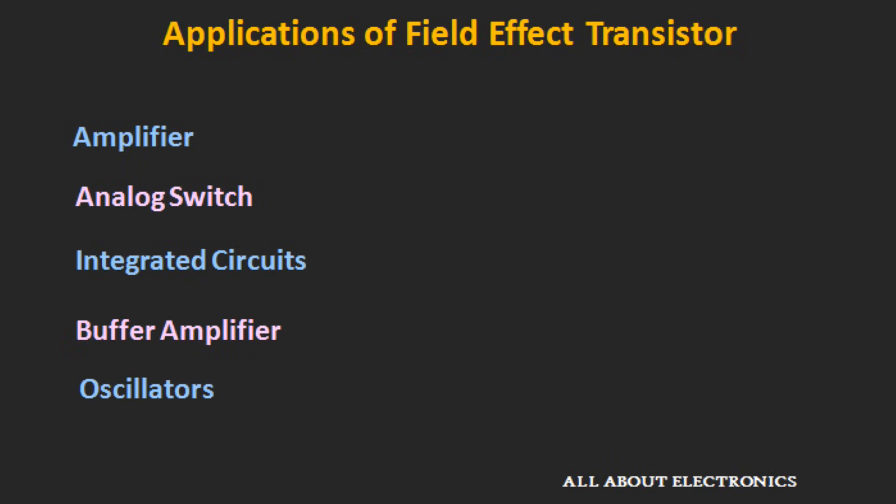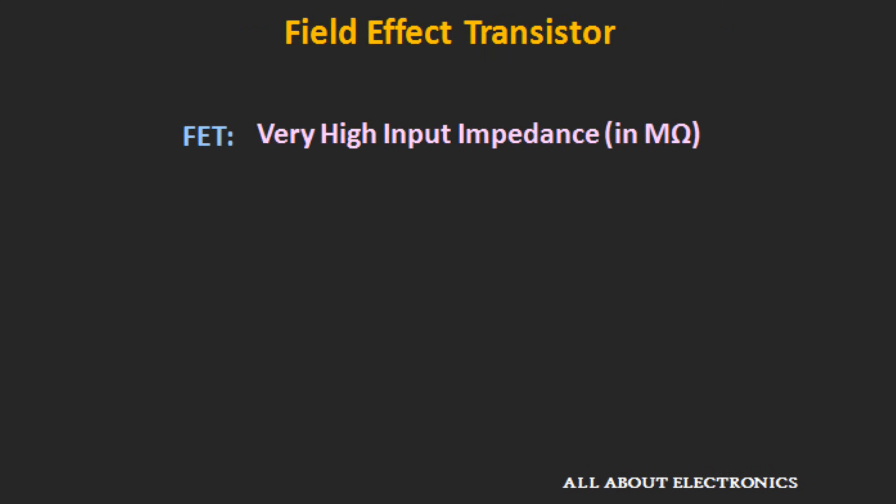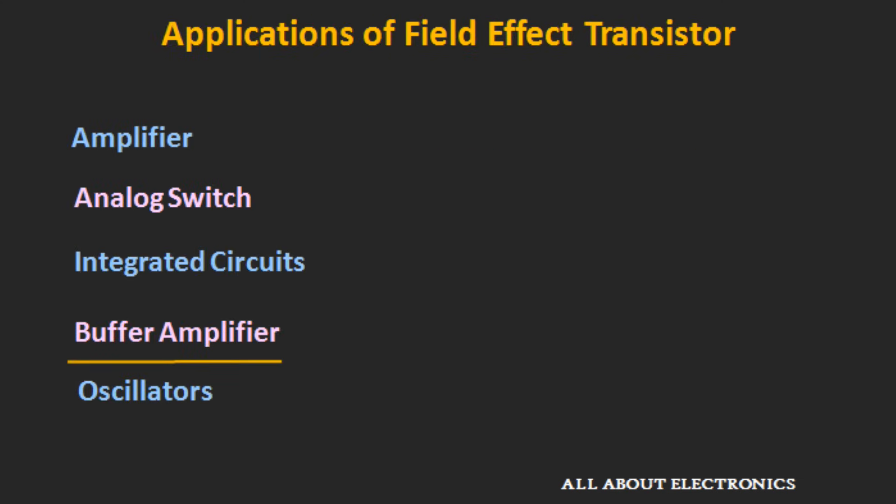In terms of application, FETs are used in almost all the applications where BJTs are used. For example, they are used as an amplifier or oscillator in many applications. Apart from that, they are also used as an analog switch. But the biggest difference between the FET and the BJT is that the input impedance of the FET is very high, and due to that they are used as a buffer amplifier in many applications.